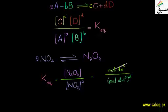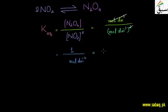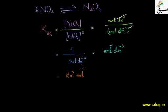We have moles per dm³ to the power of one in the numerator, over moles per dm³ squared in the denominator. This simplifies to one over moles per dm³, which gives us mole to the power of minus one and dm³ to the positive three — that is, dm³ per mole.